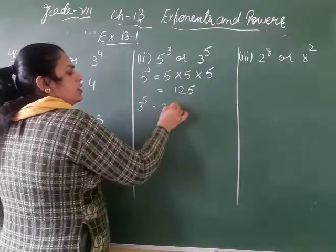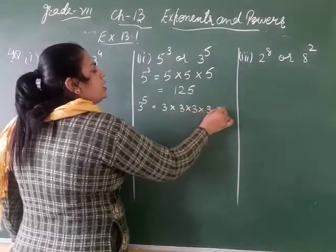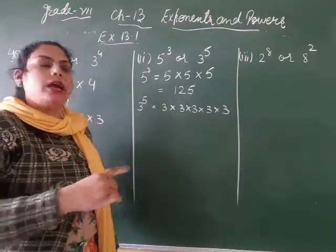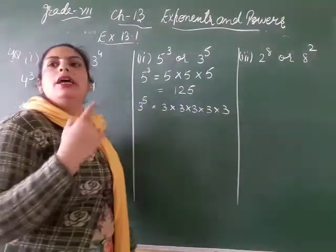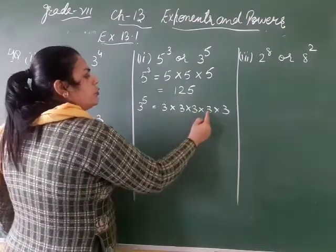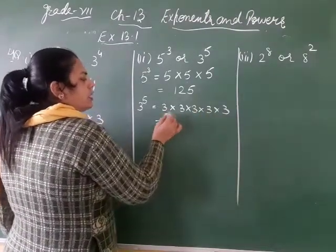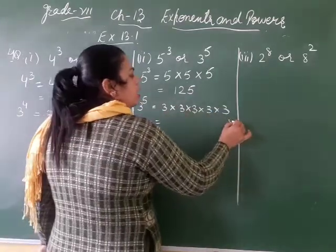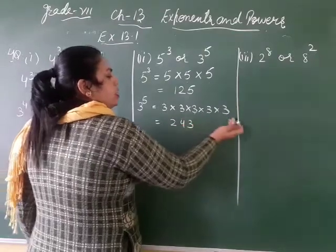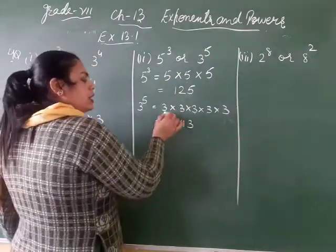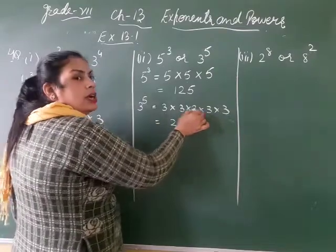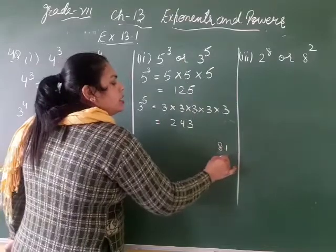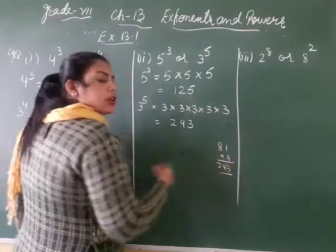Next is 3 raised to power 5. That means 3 multiplied by itself 5 times — as many times as the power, you multiply the base by itself. So: 3 threes are 9, 9 threes are 27, 27 threes are 81, and 81 threes are 243.